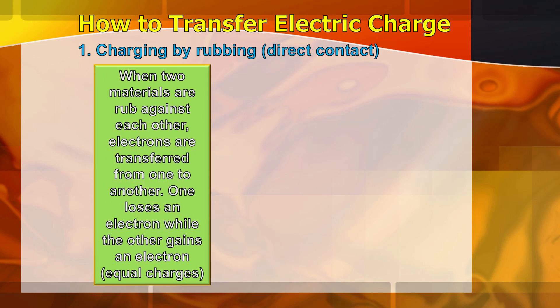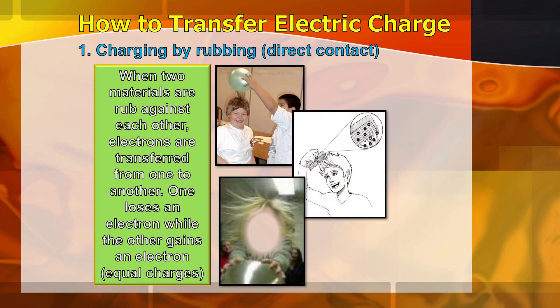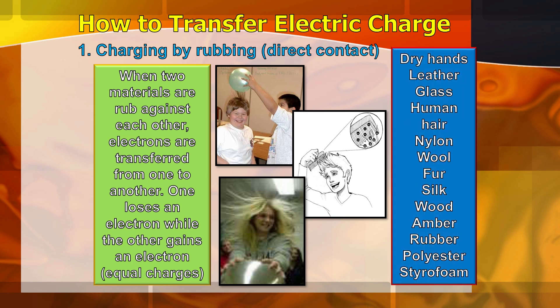On how to transfer electric charge, we have different ways. First is charging by rubbing. When two materials are rubbed against each other, electrons are transferred from one to the other — one loses electrons while the other gains electrons. These are examples in everyday life that show the transfer of electrons by direct contact, and these are the materials that can be used for this direct contact charging.